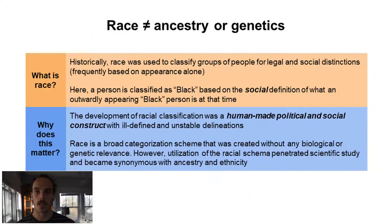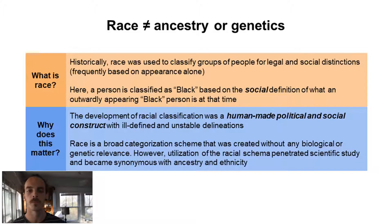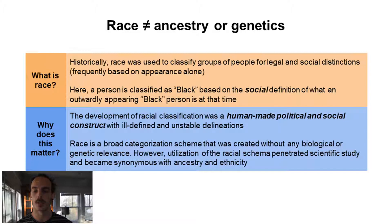So here we see how genetic information gives us data about the individual and their immediate relatives. In contrast, race does not equal ancestry or genetics. Historically, race was used to classify groups of people for legal and social distinctions, frequently based on appearance alone. The development of racial classification was a human-made political and social construct with ill-defined and unstable definitions. Race is a broad categorization scheme created without any biological or genetic relevance. However, utilization of the racial schema penetrated scientific study and became synonymous with ancestry and ethnicity.